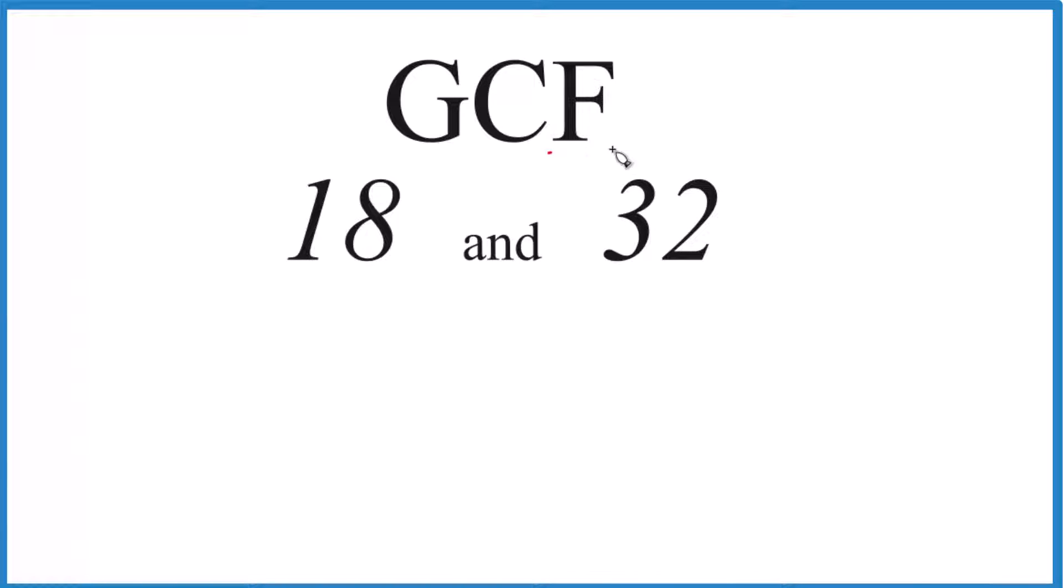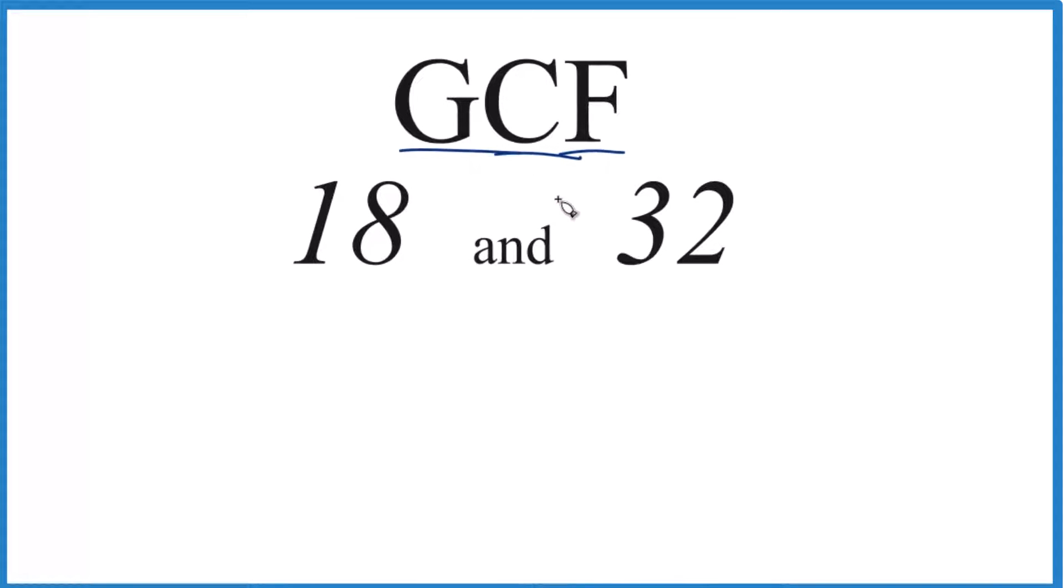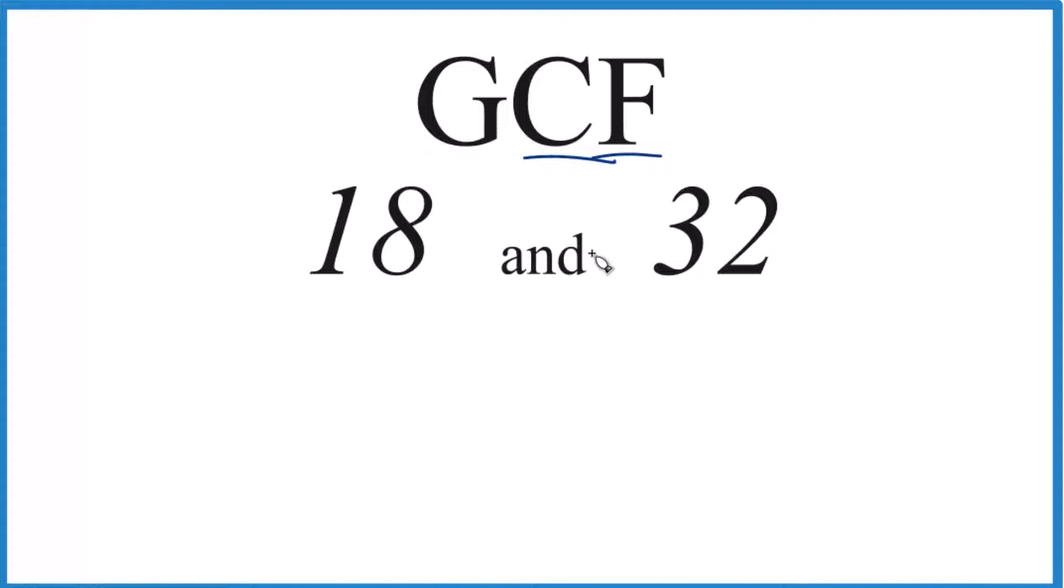So what we do, we find the factors for 18 and 32, look at the common factors, and then choose the greatest common factor, the GCF.